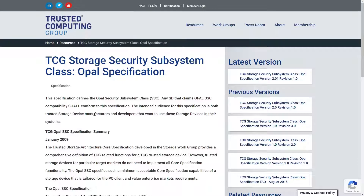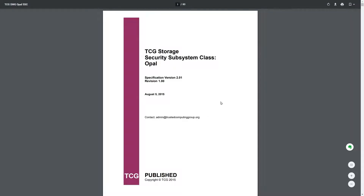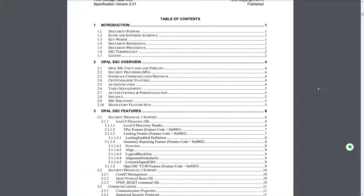There are a few options for encrypting a storage device. Options include self-encrypting drives, also called SEDs. A common term for encrypting the entire disk is full disk encryption, or FDE. One standard for self-encrypting drives is the Opal storage specification. At the Trusted Computing Group website, they have details on this specification - currently version 2.01, revision 1.0. It provides encryption for the drive so that if the drive or mobile device is stolen, an unauthenticated user won't have the keys to unlock the contents.